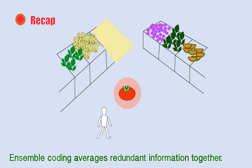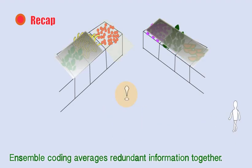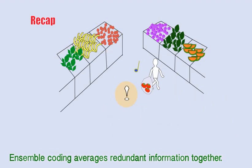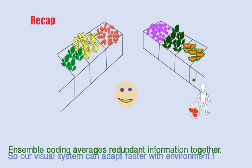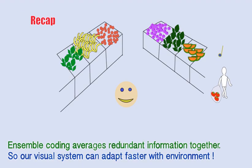Ensemble coding averages the redundant information together, so our visual system can adapt faster with the environment.